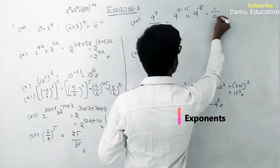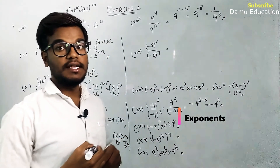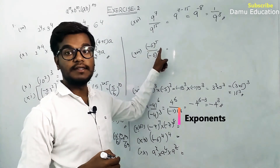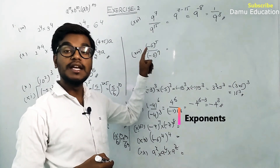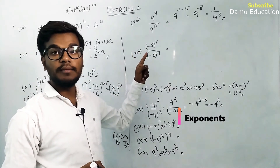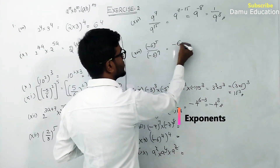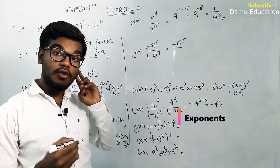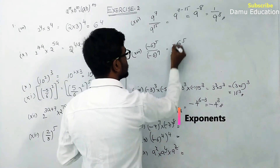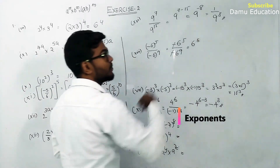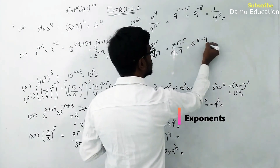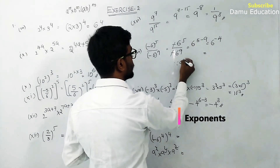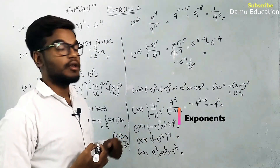We can write a power minus n as 1 by a power n. Next: minus 6 whole power 5 by minus 6 whole power 9. Power 5 is odd so minus stays: minus 6 power 5. Power 9 is odd so minus stays: minus 6 power 9. Minus divided by minus cancels. Using a power m minus n: 6 power 5 minus 9 equals 6 power minus 4, which equals 1 by 6 power 4.